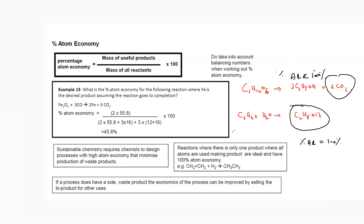A reaction where there is only one product — where all atoms are used making the desired product — will have 100% atom economy. If a process does have waste products, the economics can be improved by selling the by-products for other uses, making the process more sustainable.